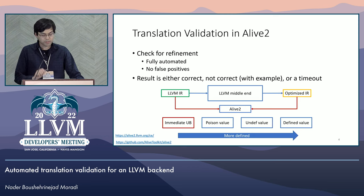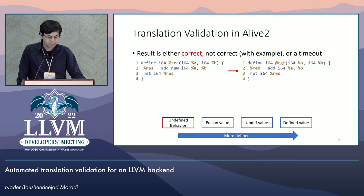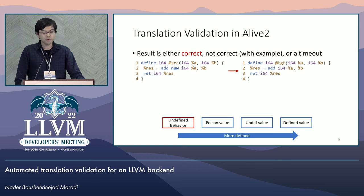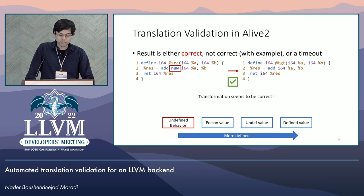Timeout is self-explanatory, but let's go over a simple example that shows the two other possibilities. Here we have an example of a correct transformation. Both functions perform an addition. However, the source function has the no unsigned wrap keyword on its add instruction. This keyword implies that when the result of an addition is an unsigned integer overflow, the produced result is a poison value. For this pair of source and target functions, the refinement relation is satisfied if the result of the optimized IR is more defined than the source IR. This is the case here since the target function produces the same output when there is no unsigned overflow and produces a defined value when there is an unsigned overflow, instead of the poison value returned in the source function.